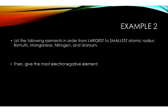In the second example, list the following elements in order from largest to smallest atomic radius. Bismuth, manganese, nitrogen, and uranium. Then, give the most electronegative of those elements. So on the periodic table, I know that bismuth is very far below others. Manganese is one of the top row transition metals. Nitrogen is a non-metal in the second row. And uranium is one of the very bottom elements.